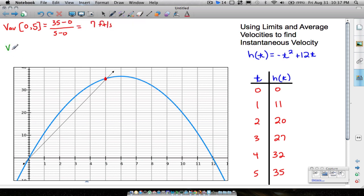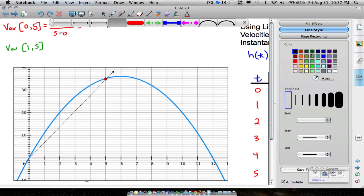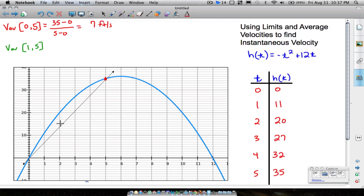All right, what about the average velocity from 1 second to 5 seconds? Let's see what that looks like. All we're finding again, though, is the slope, but now we're doing it from 1 second. And what was its height at 1 second? 11. So roughly right about here, up to here. We're trying to find that slope now.